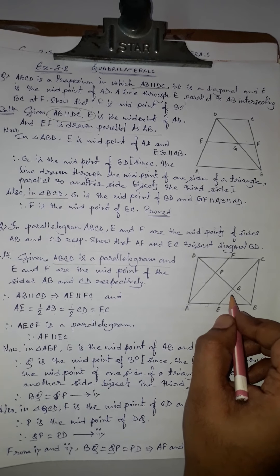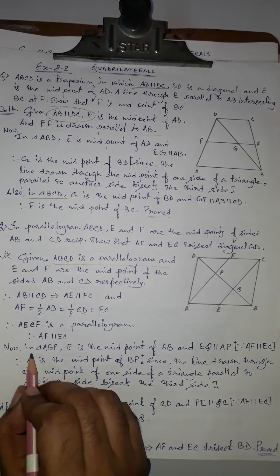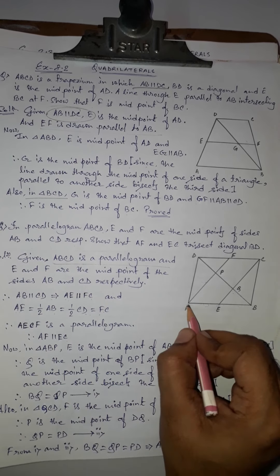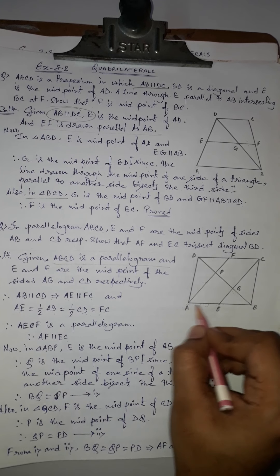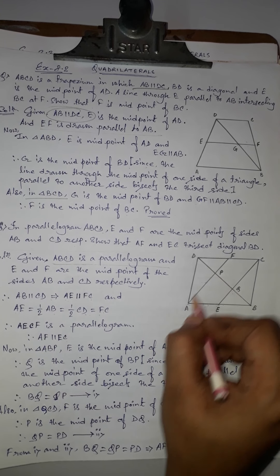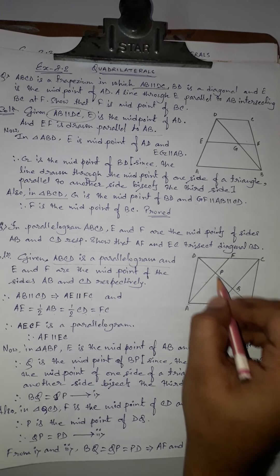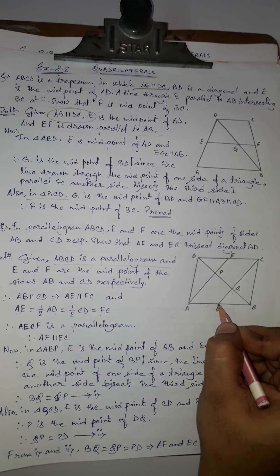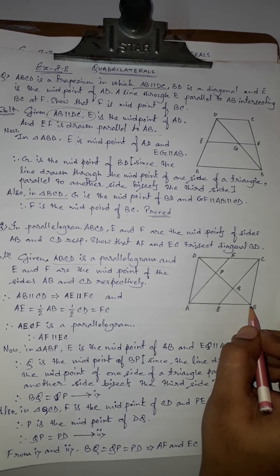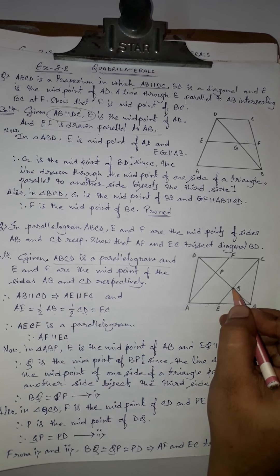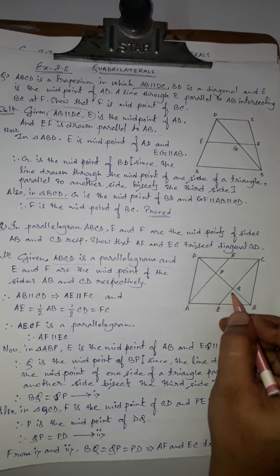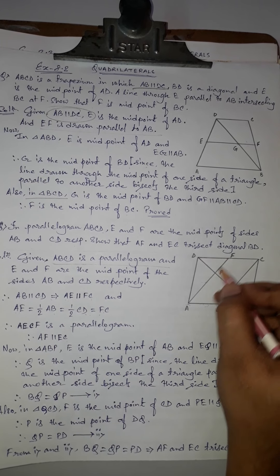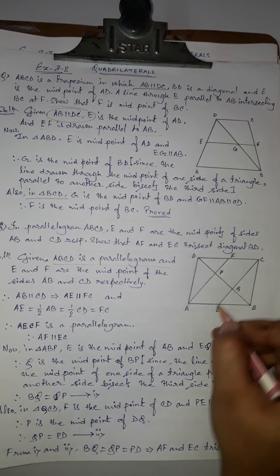Now considering triangle ABP: E is the midpoint of AB, and EQ is parallel to AP since AF is parallel to EC.